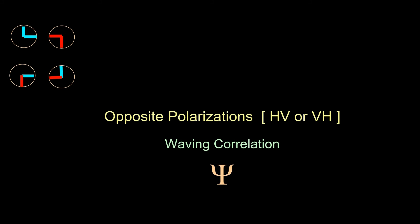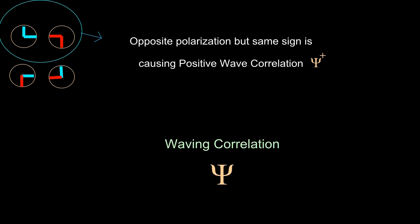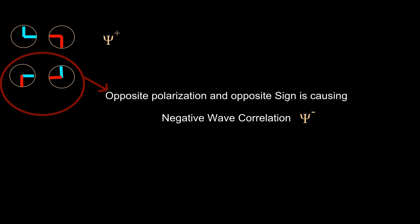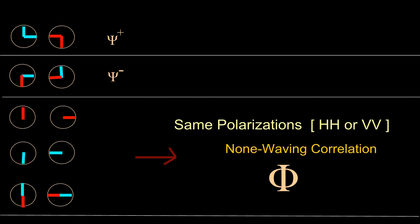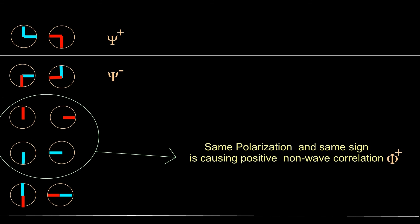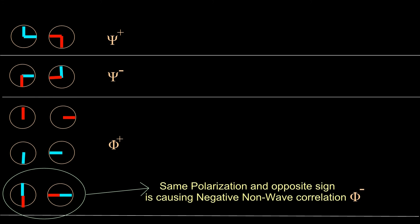The entangled two-photon state of opposite polarization is subdivided by its rotational state, giving four different combinations. Opposite polarization with the same sign causes positive wave correlation. Opposite polarization with opposite sign causes negative wave correlation. Same polarization state has six possible combinations, in which four combinations have the same sign and cause positive non-wave correlation. The other two combinations have opposite signs and cause negative non-wave correlation.